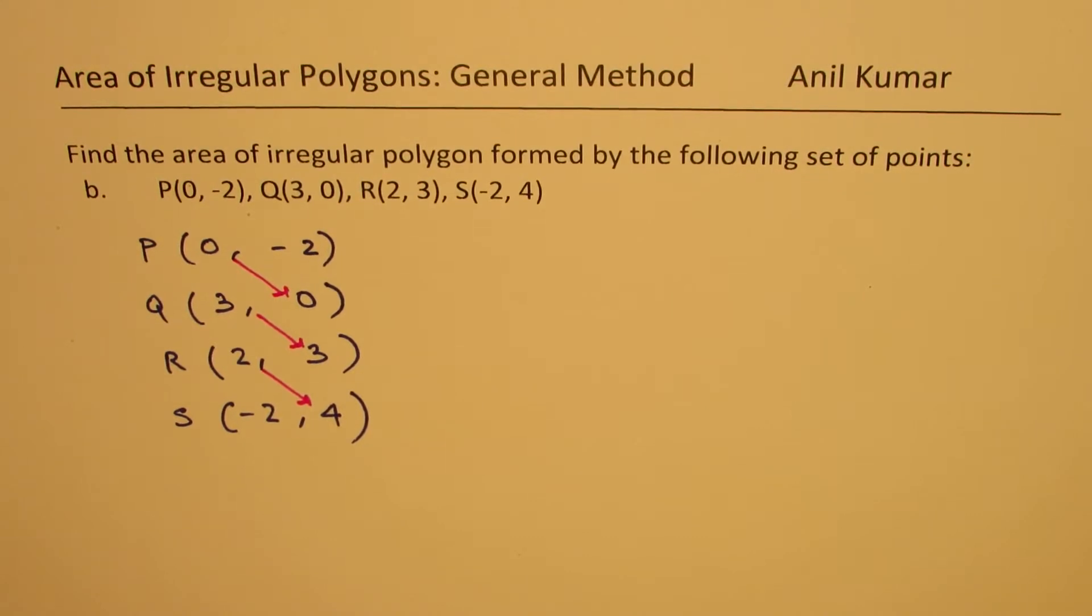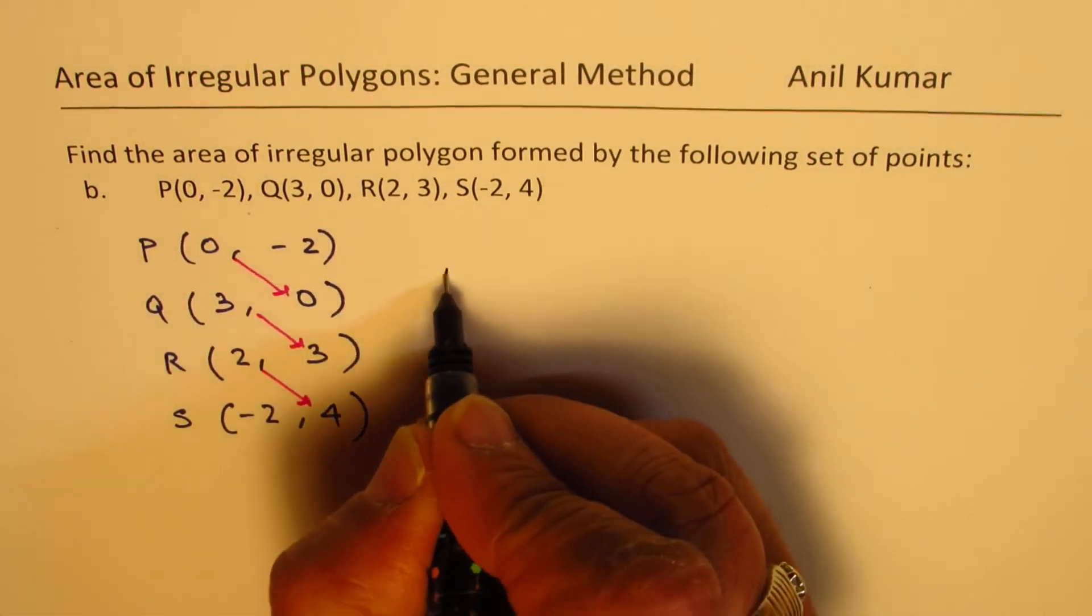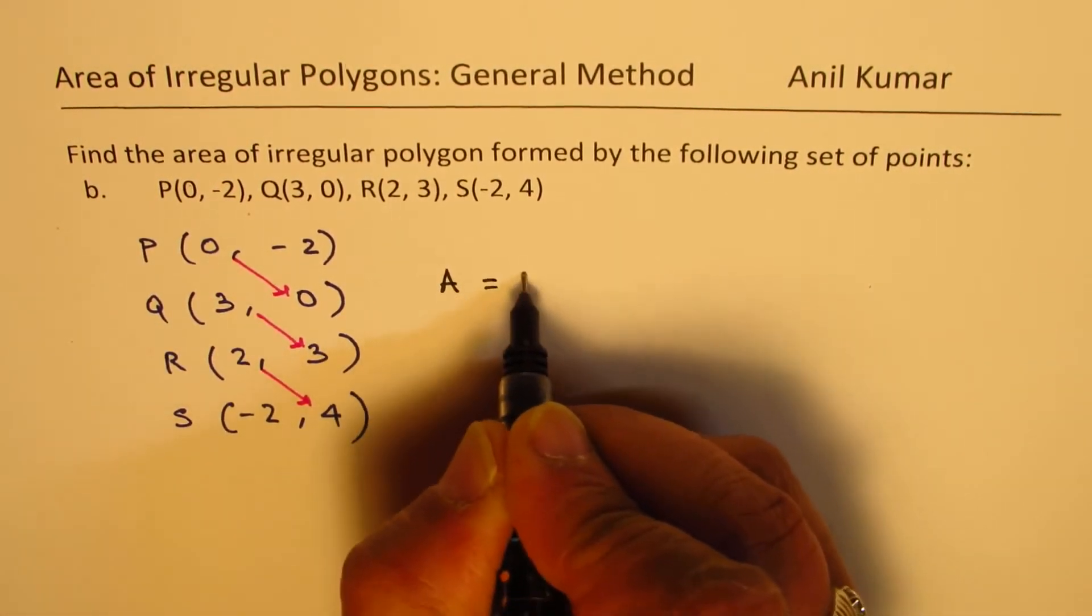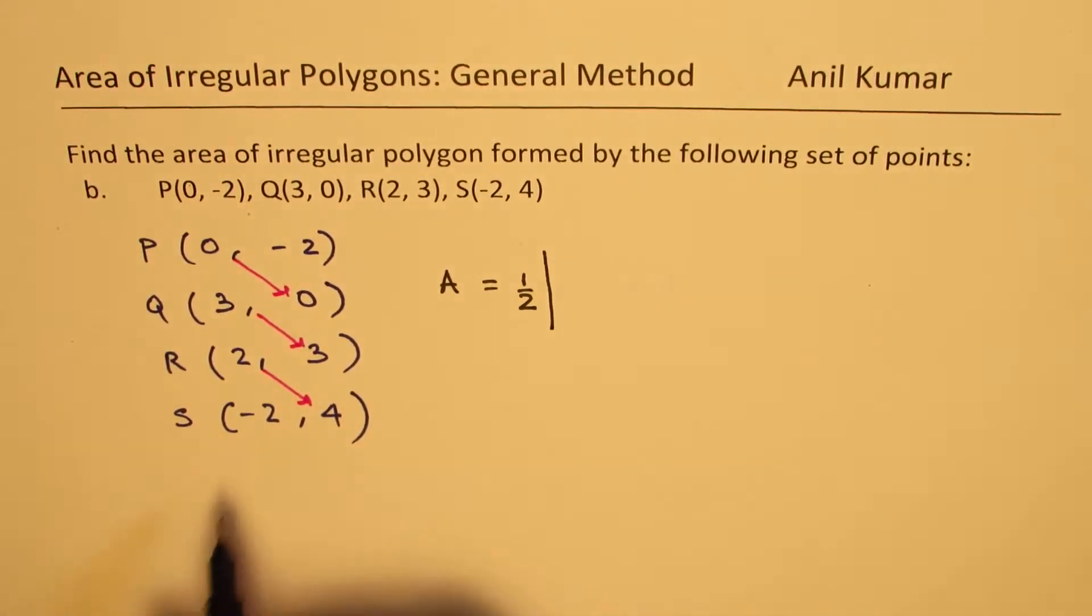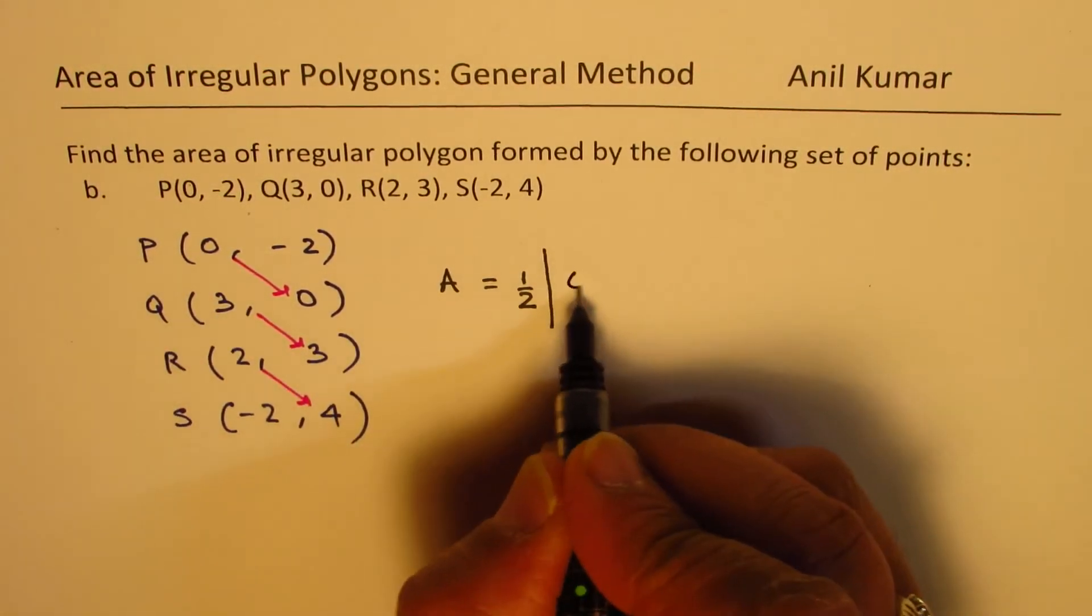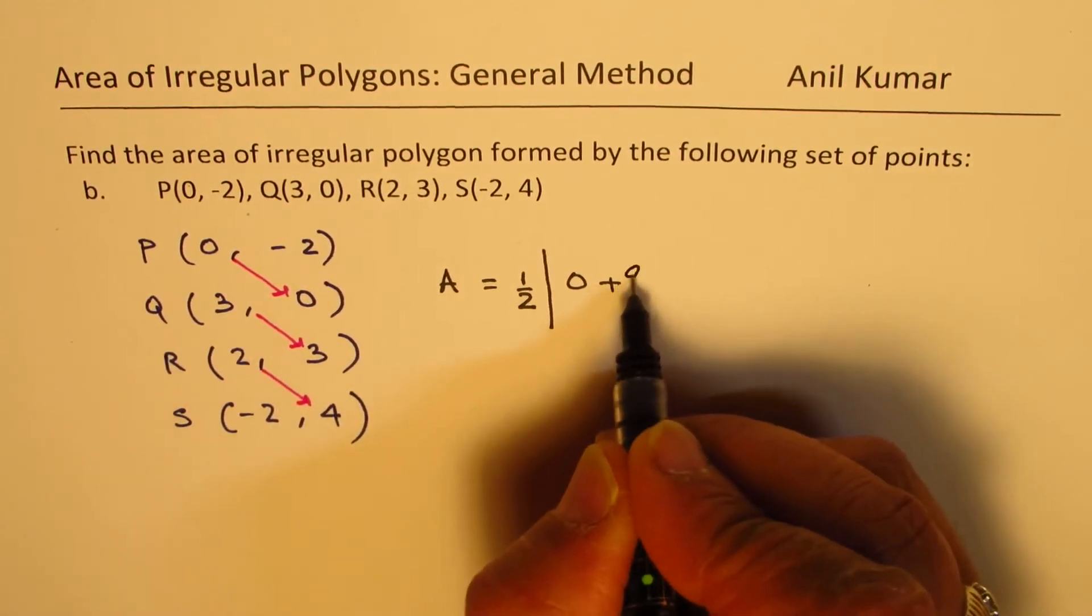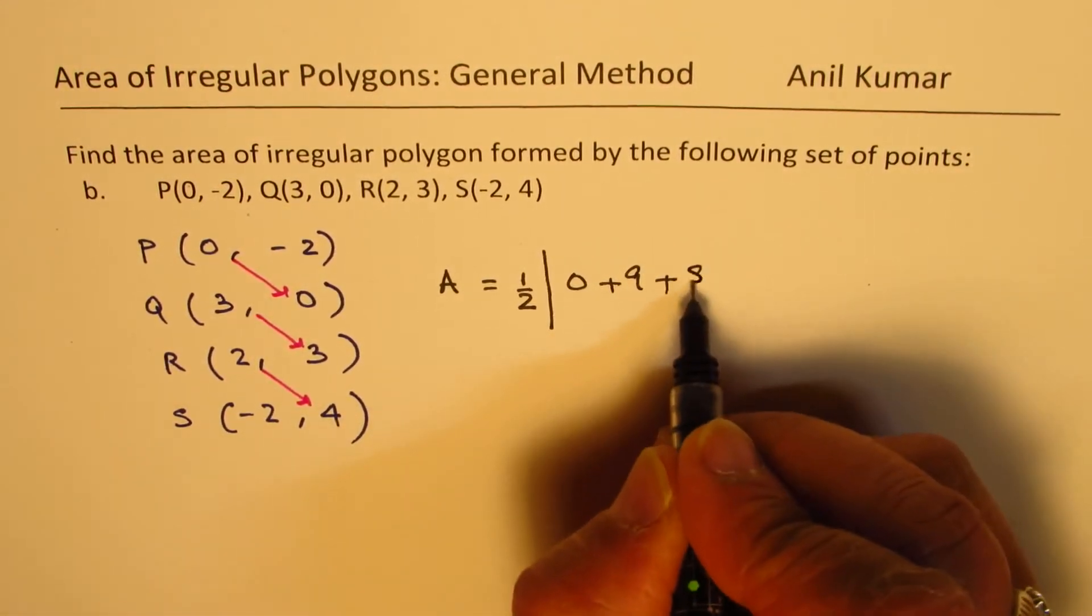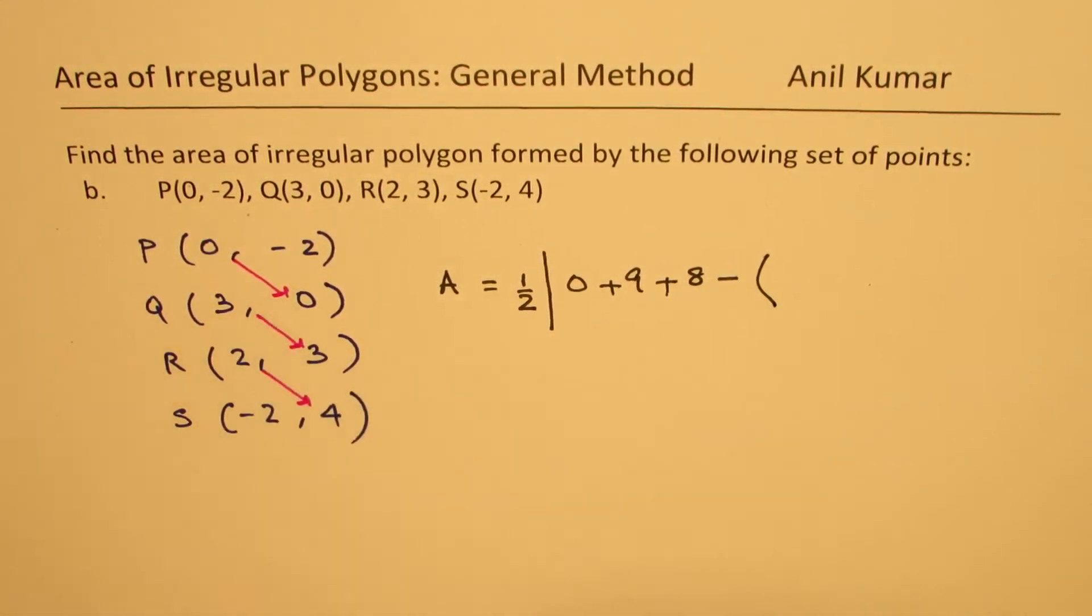We get the area of this quadrilateral as equal to half of absolute value of 0 times 0 is 0, plus 3 times 3 is 9, plus 2 times 4 is 8.